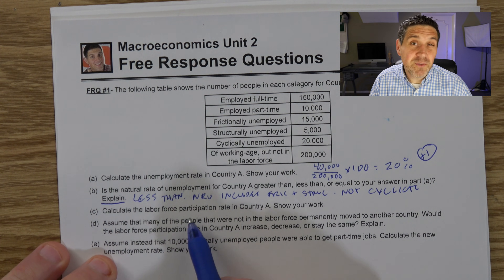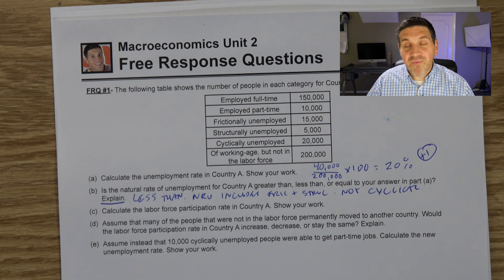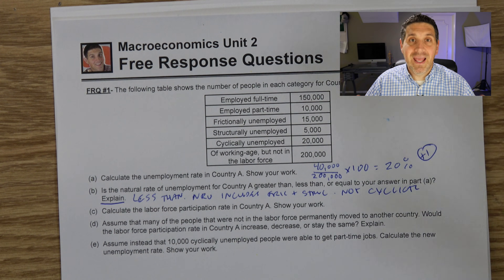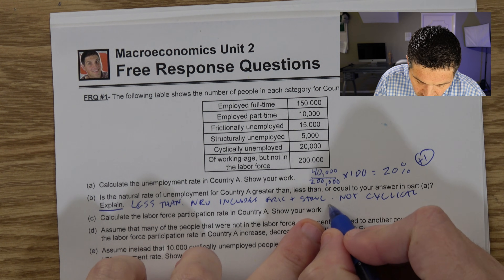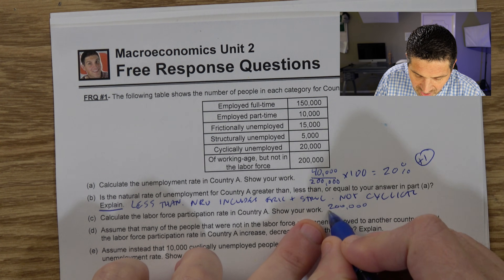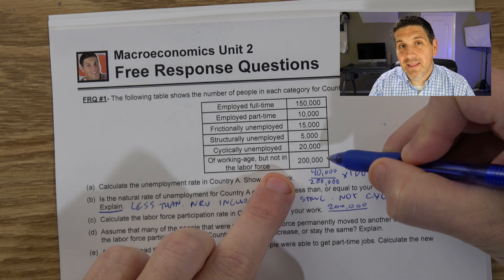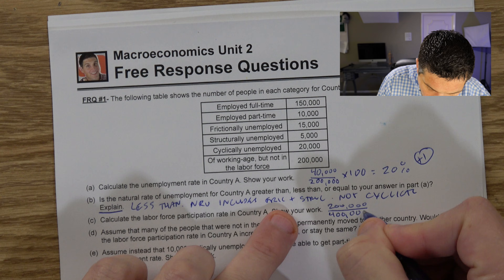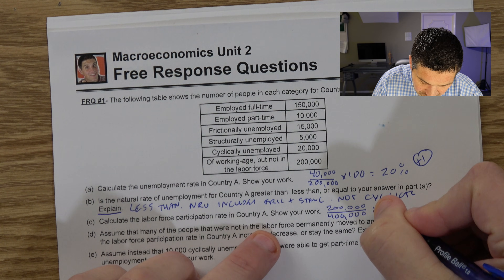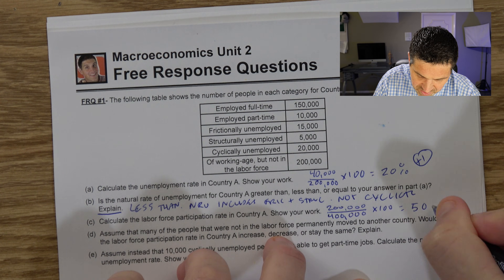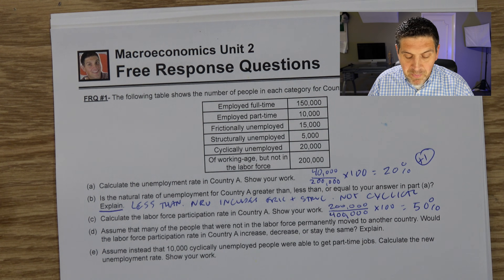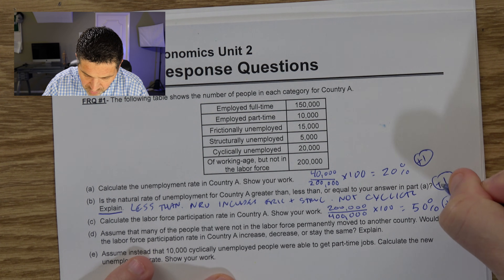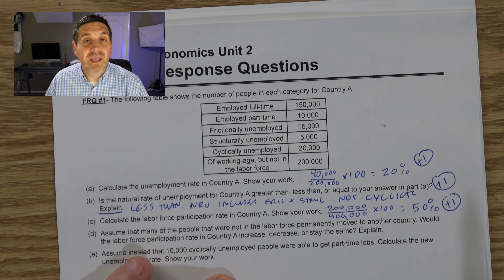Calculate the labor force participation rate in Country A. The labor force participation rate is the number of people in the labor force divided by the number of people who are of working age who could be in the labor force. The labor force is 200,000. Adding the 200,000 people not in the labor force gives a total working-age population of 400,000. So 200 divided by 400 times 100 equals 50% — that's the labor force participation rate. Make sure you show your work and explain.